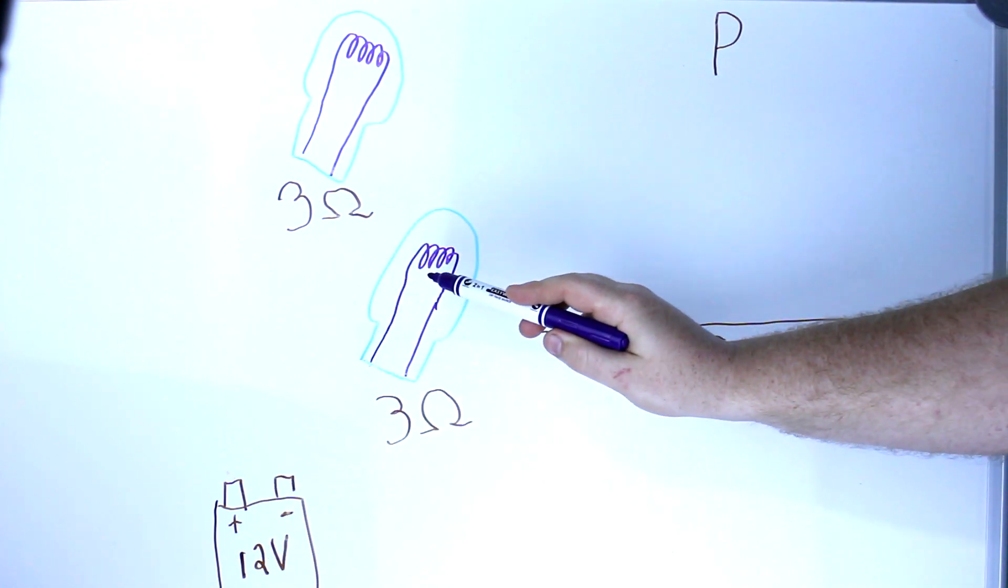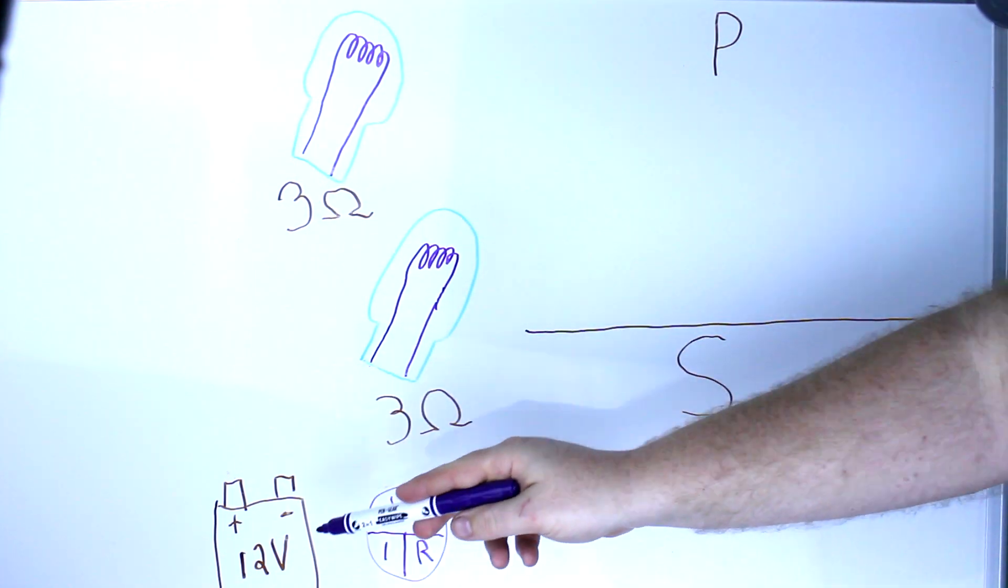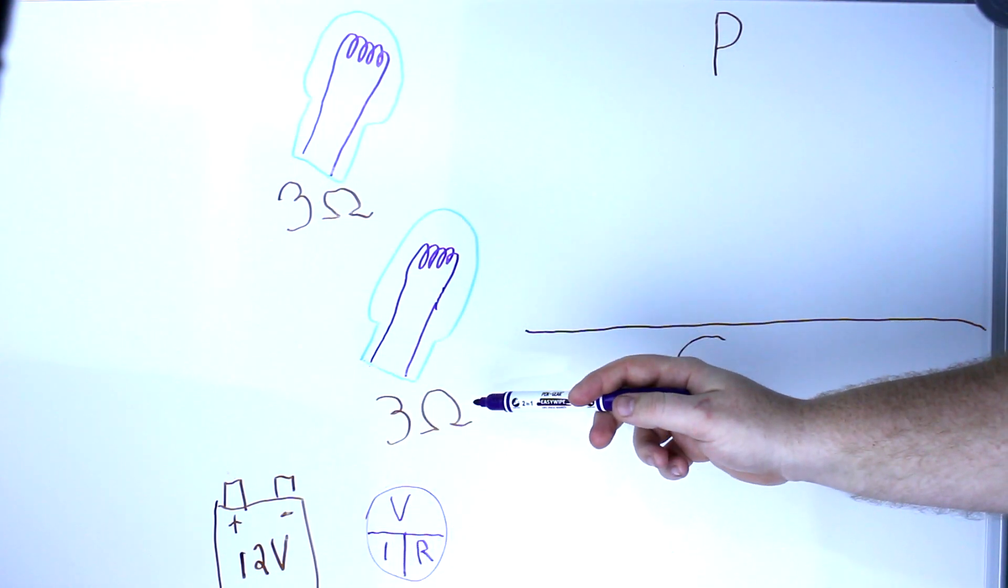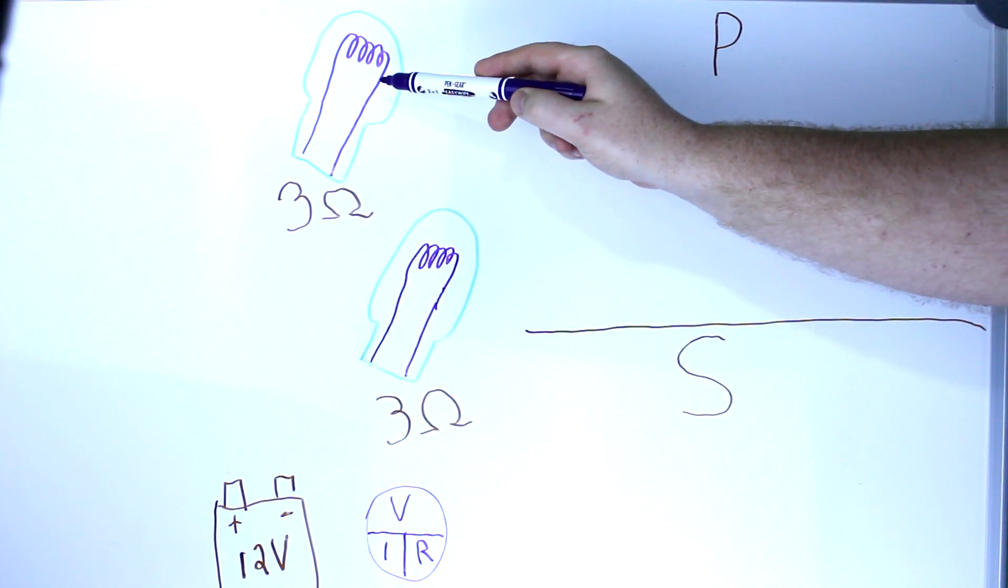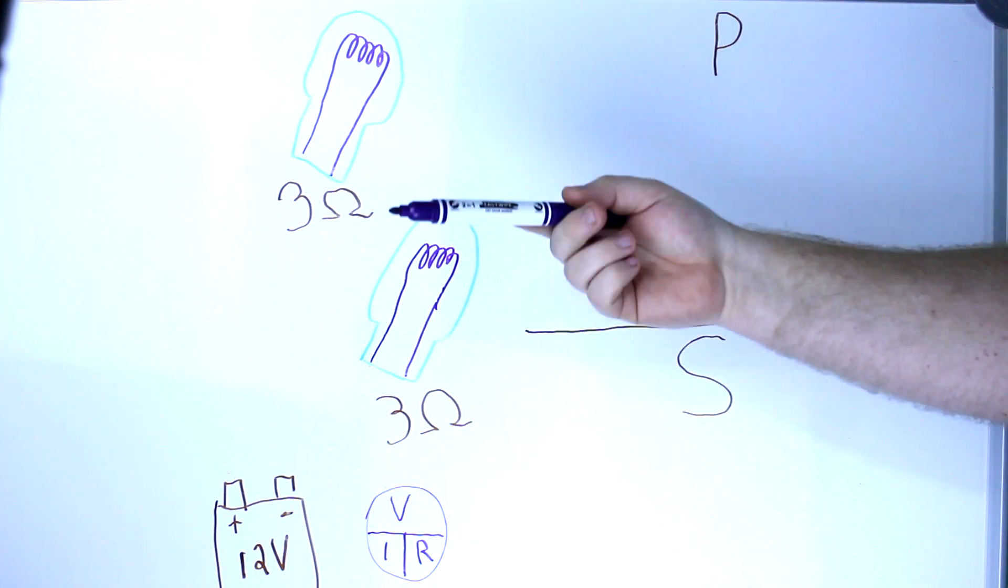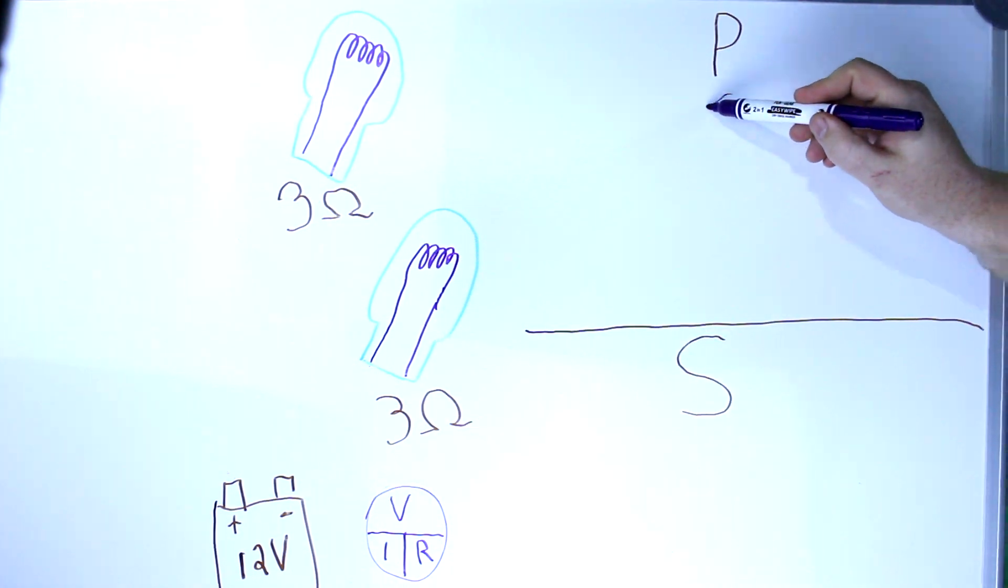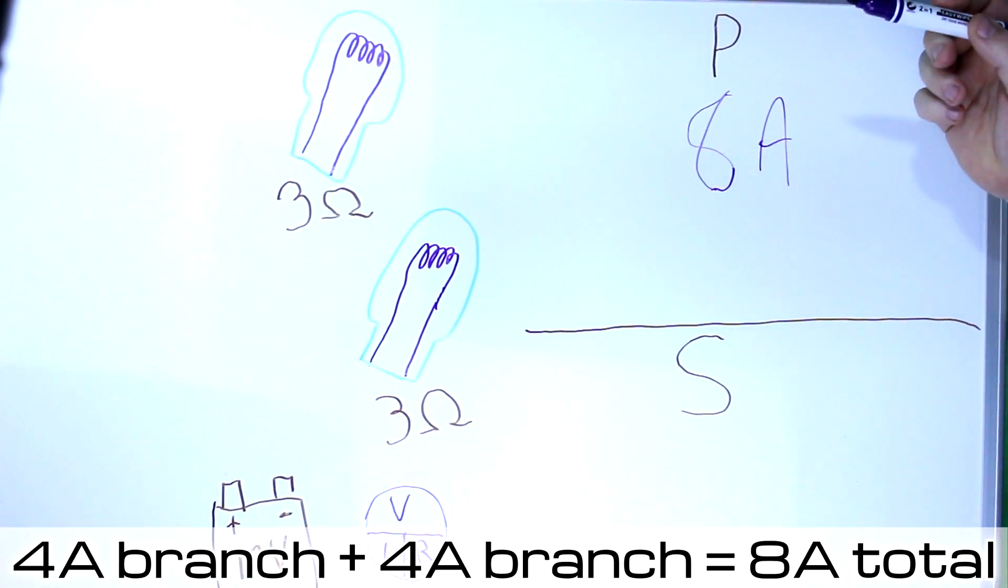And then they come back separately as well. So this voltage divided by resistance is going to be 4 amps. So there's 4 amps on here, and there's also 4 amps on here. So you add those together, you're going to have 8 amps on your parallel circuit.